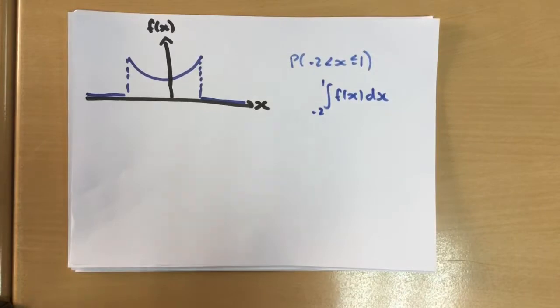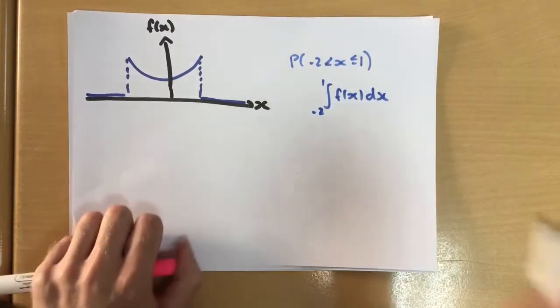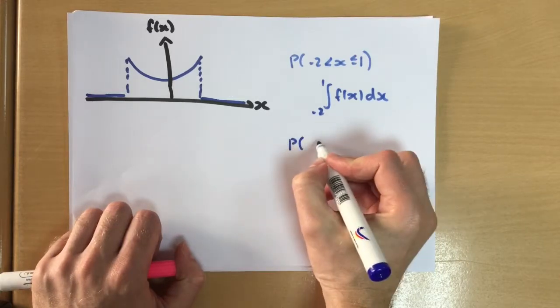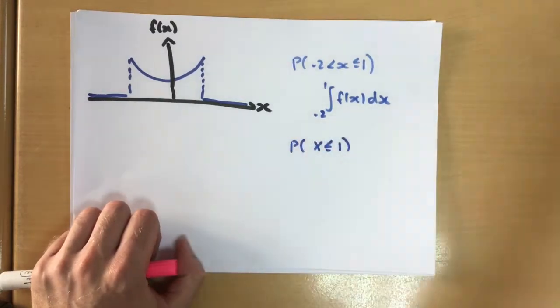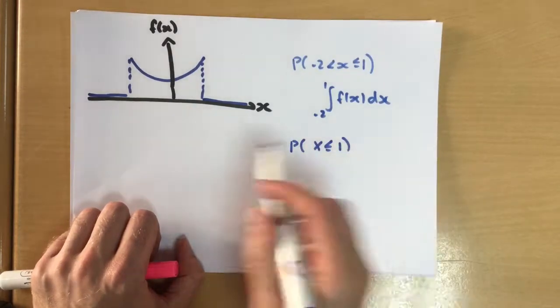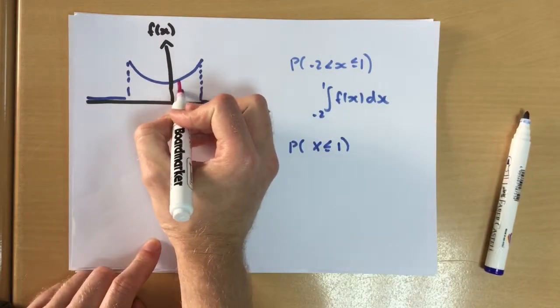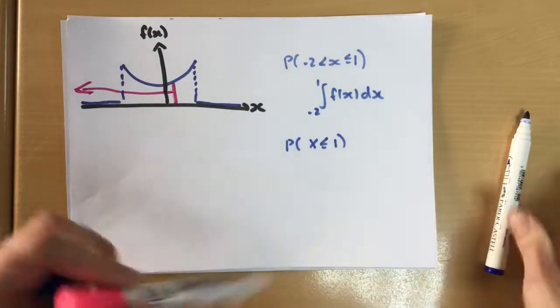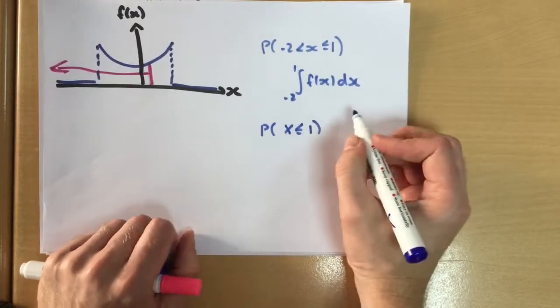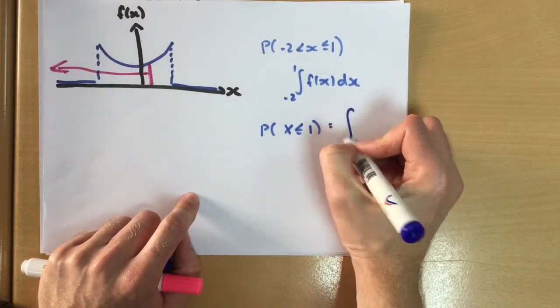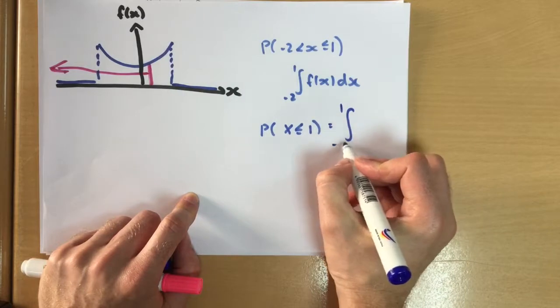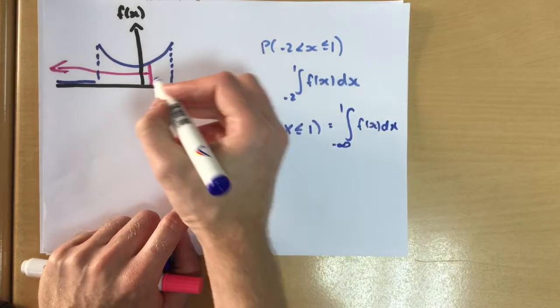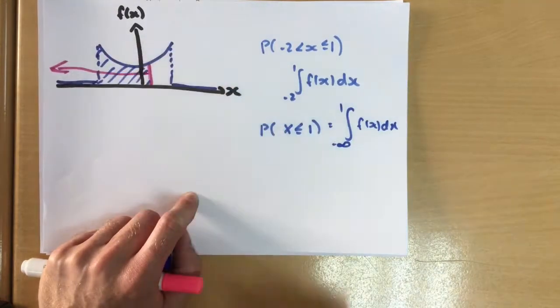Now we're going to consider in particular what if we wanted, for example, any temperature below one degree. So anything from that point downwards. Now here you'd have to integrate between one and negative infinity to find all the area below that point.